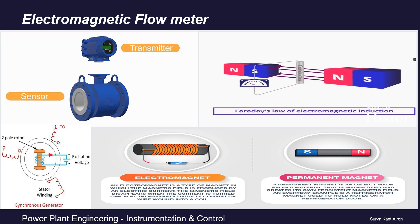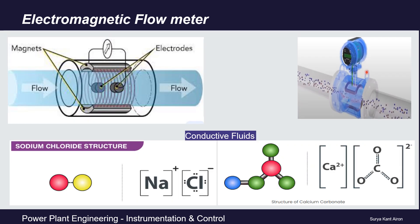In our electromagnetic flow meters, we have electromagnets connected to an electrical power source, which generates a magnetic field in that cross-section between the two electromagnets. To fulfil Faraday's law of electromagnetic induction, we need a conductor moving perpendicular to the magnetic field. In the case of electromagnetic flow meters, the fluid flowing through the pipeline serves as the conductor.